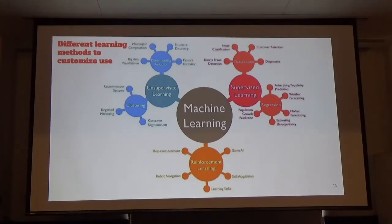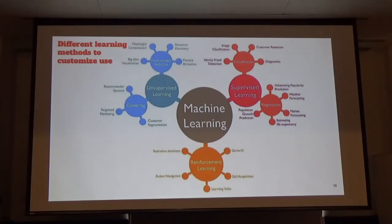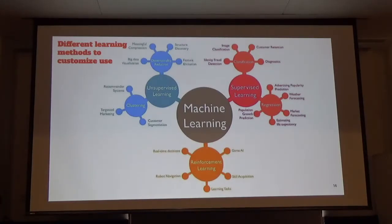In classification, the output is a category, like a color. In regression, the output is a continuous variable, like a probability. For unsupervised learning, there is no target variable — you want to learn something about your data. Unsupervised learning can be broken into clustering and dimensionality reduction. In clustering, you give the machine your data and it groups it by common features. In dimensionality reduction, the machine looks for the dimension of your parameters that varies the most, and you analyze those while ignoring the rest, turning a large data set into a smaller one.